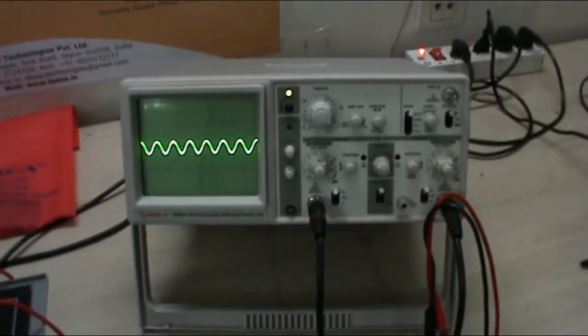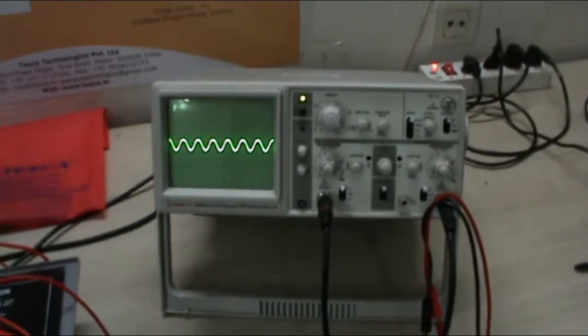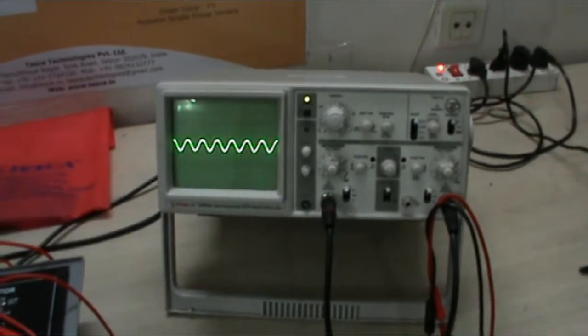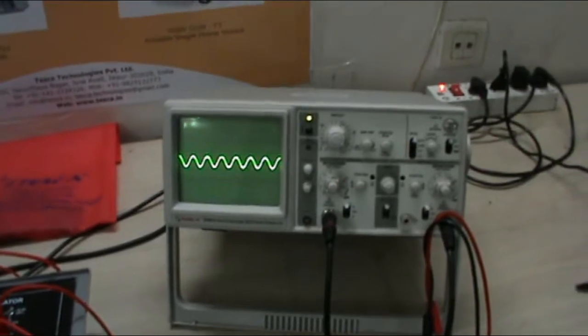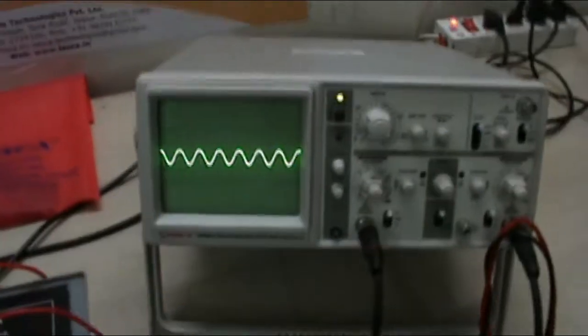Previously we used the absorption wave meter in order to measure the oscillations produced by the oscillator. Now we measure it through the oscilloscope by seeing in the waveform.